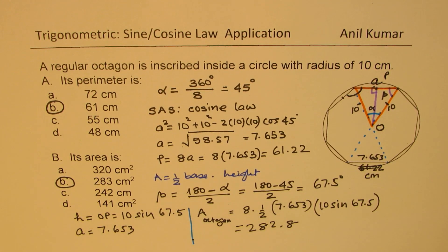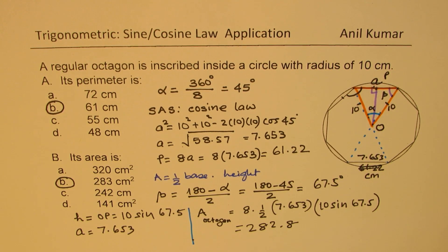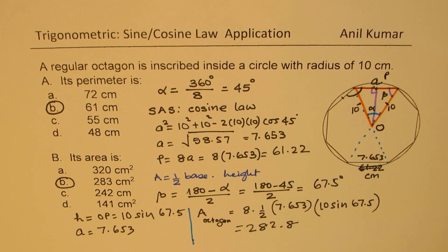That is how we find the area of this octagon inscribed inside a circle with radius of 10 centimeters. I hope all the steps are absolutely clear. This is a very important question from a test point of view — feel free to go through this video once again. I highly appreciate your suggestions, comments, and if you share my videos. Thanks for your time and all the best.